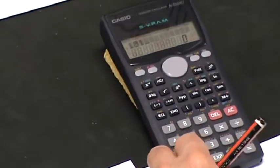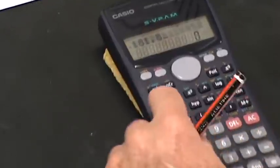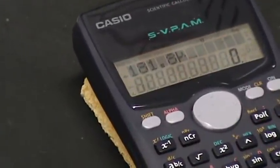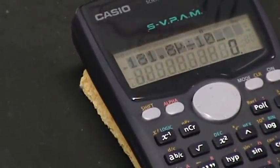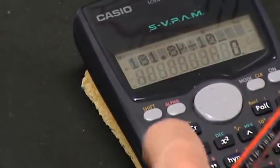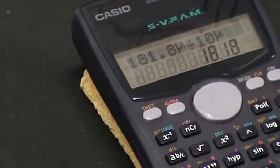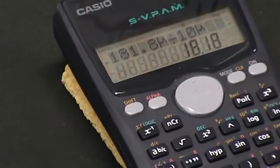Actually 181.8 microcoulombs divided by 10 microfarad equals 18 volts. We're going to call it 18.2 volts, we'll round that up to make that nice.